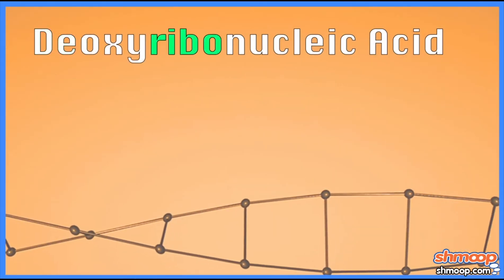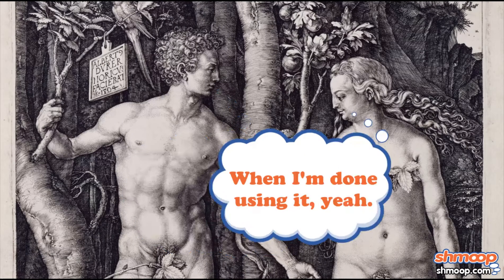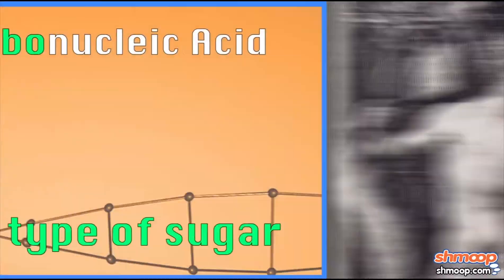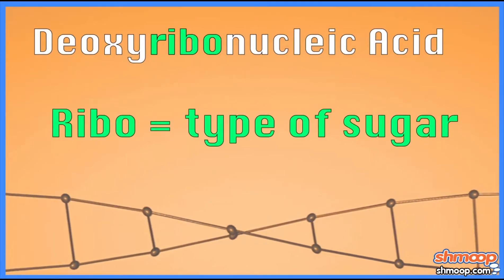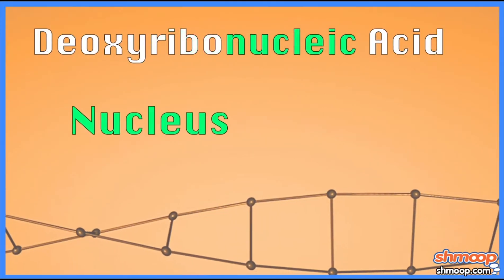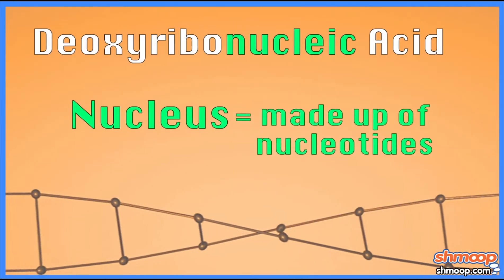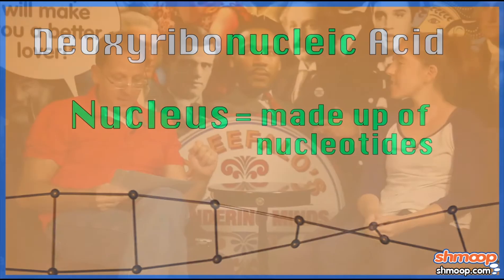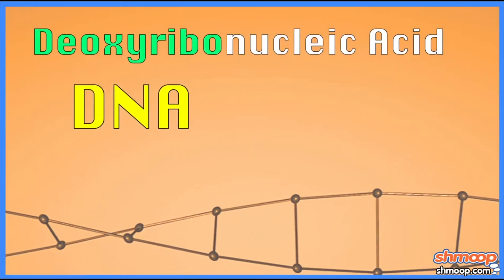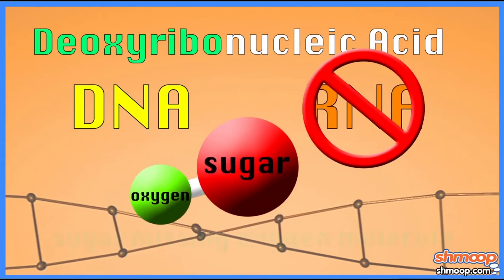And ribo — that's something to do with like Eve and Adam? Ribose is just a type of sugar. And then nucleic — the nucleus is the... yeah, so it's the same idea. Basically in the nucleus it's made up of these nucleotides. So deoxyribose tells us that it's DNA, not RNA, because the sugar is missing an oxygen molecule.